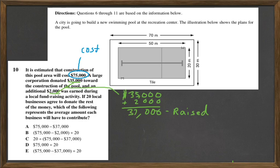Well, if you add the $35,000 and the $2,000, you get $37,000 raised.